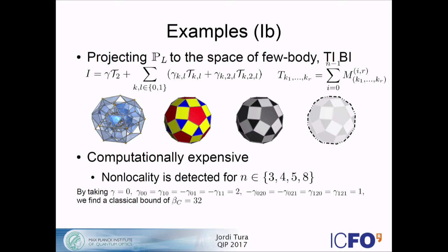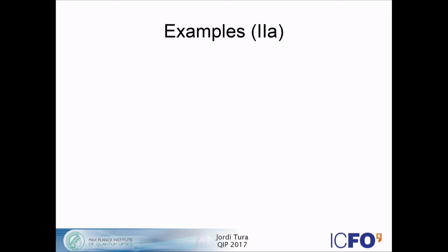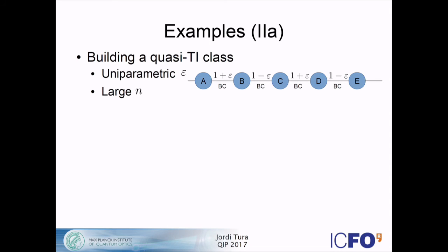Here is an example. Taking these coefficients, the classical bound is 32, and quantum can go to 32.2. It's not much, but it's something — you prove that for this inequality the ground state with appropriate measurements has non-local correlations. But we would like to do something better than this. So we thought of building a quasi-translationally invariant class with one parameter epsilon that works for large N.